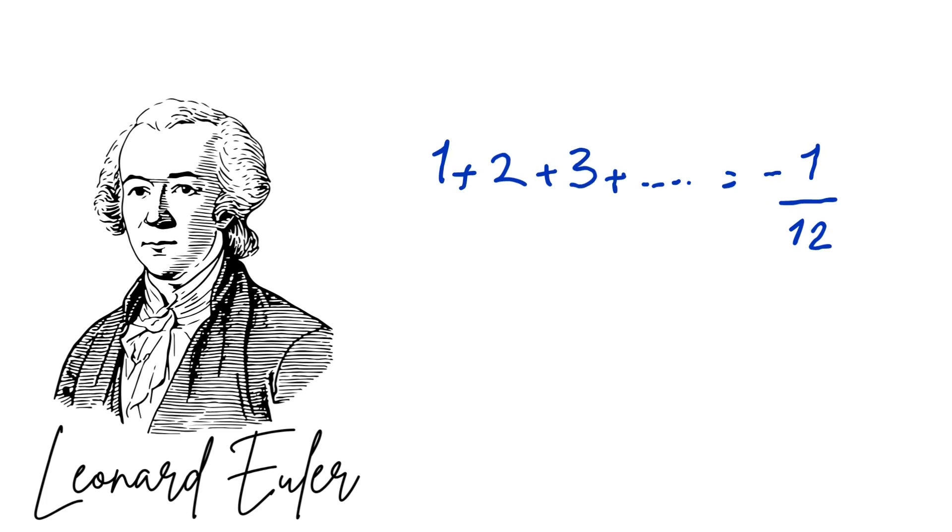For example, he boldly claimed the sum of all natural numbers is equal to negative one over twelve. Well, here's a demonstration of how he did it.